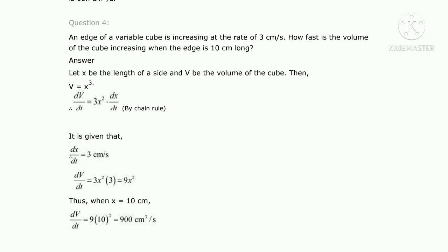The edge increasing rate is given as dx/dt equals 3 centimeter per second. Substituting: dV/dt equals 3x squared times 3 equals 9x squared. The edge is 10 centimeter long, so x equals 10. Therefore dV/dt equals 9 times 10 squared equals 900 centimeter cube per second. Today we have done four questions.